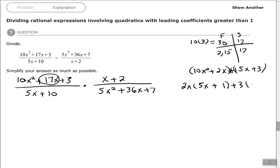So divide each one of those by 3: 15x divided by 3 is 5x, and 3 divided by 3 is 1. Then factor out the common binomial (5x + 1) and multiply by (2x + 3).